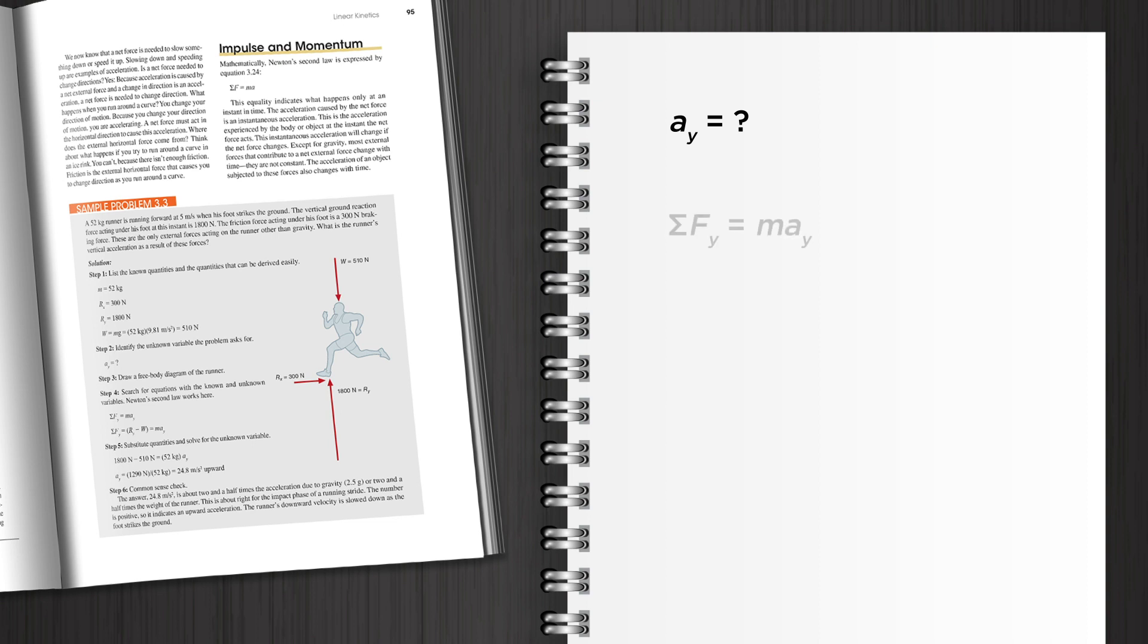Net external force equals mass times acceleration, which can also be stated as net external force equals the vertical ground reaction force minus weight.